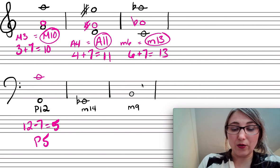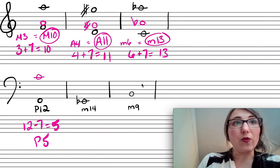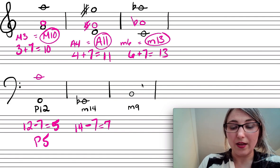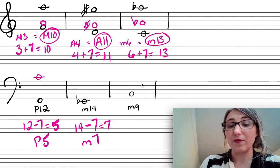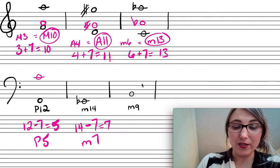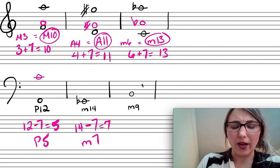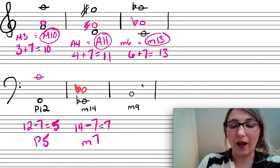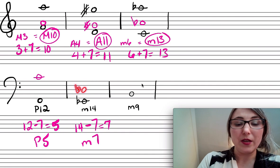Let's do a minor 14th. 14 minus 7 equals 7, so a minor 14th is a minor seventh plus an octave. A major seventh above E-flat is D, so a minor seventh above E-flat is D-flat. Then I add an octave, giving me D-flat up here.